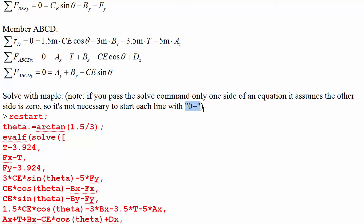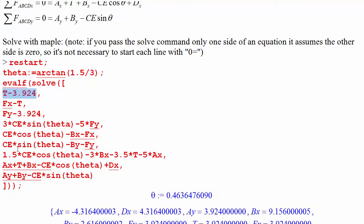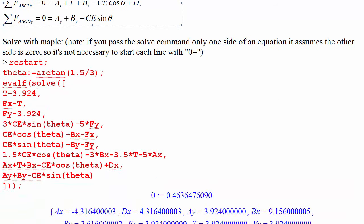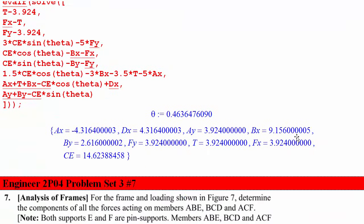Now I'll point out that if you don't give the solve command an equation, so in this example you just gave it t minus 3.924, it assumes you mean zero equals. So you can save a little bit of time in subbing all of these into Maple by not having to write all of that. All right. And there's our answer.